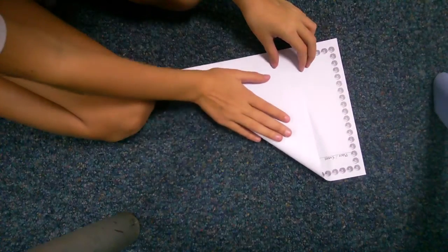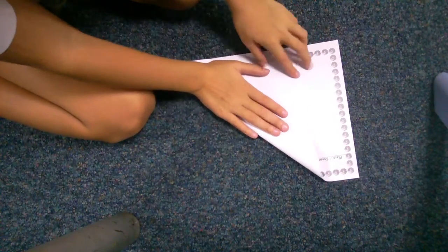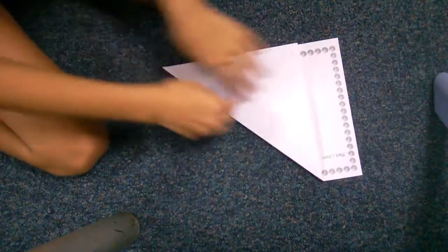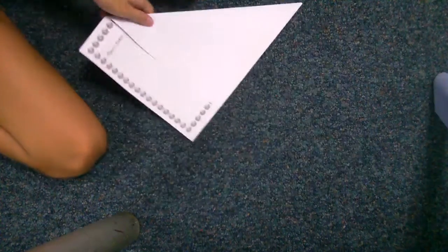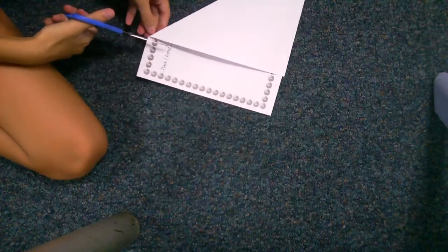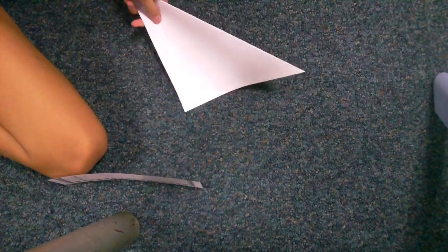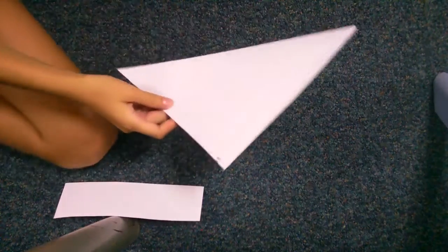You just put it like this, make sure it's straight, then you cut it out here so you make it into a square.